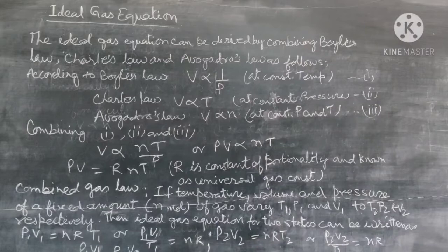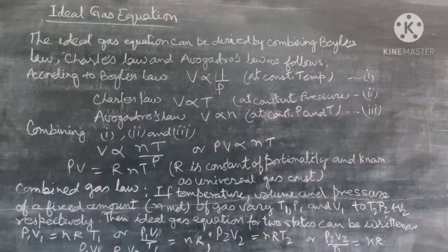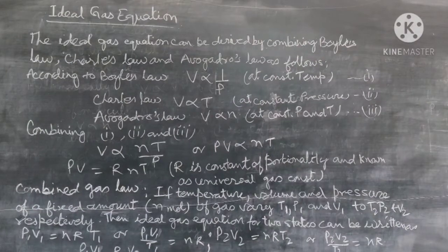Since this equation relates four variables used to describe the state of any gas, it is also known as the equation of state for an ideal gas. It may be noted that out of four variables, pressure and temperature are intensive variables as they do not depend on the bulk or quantity of the gas.